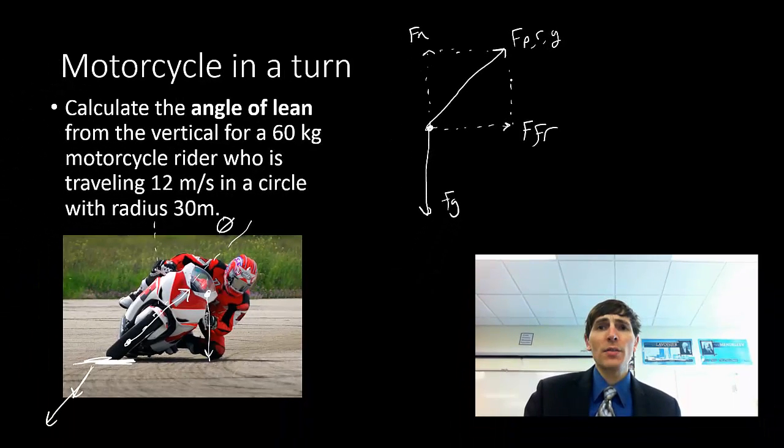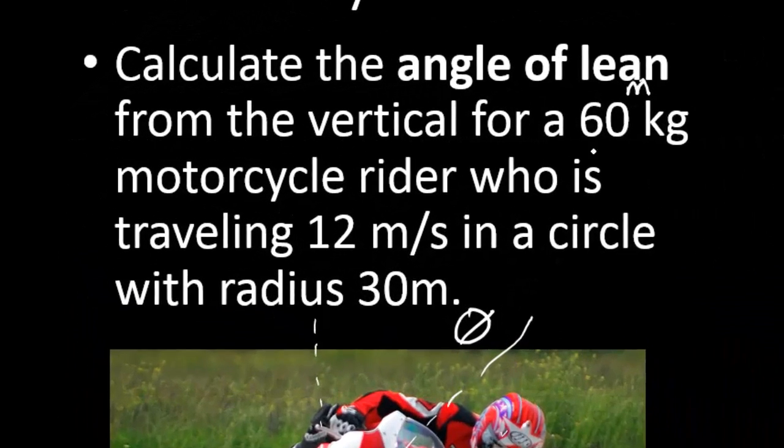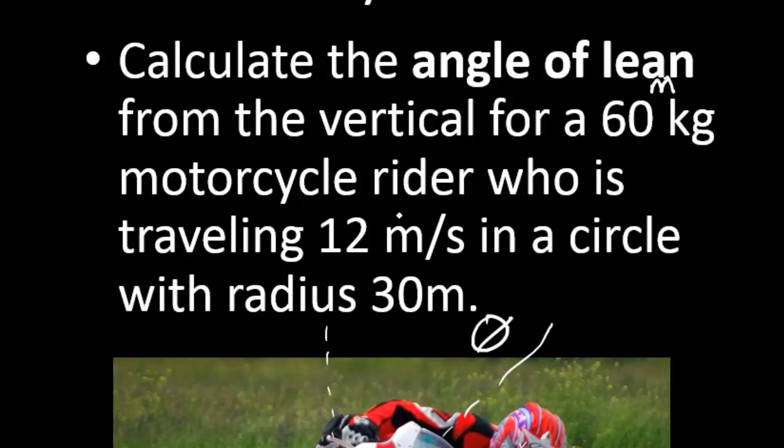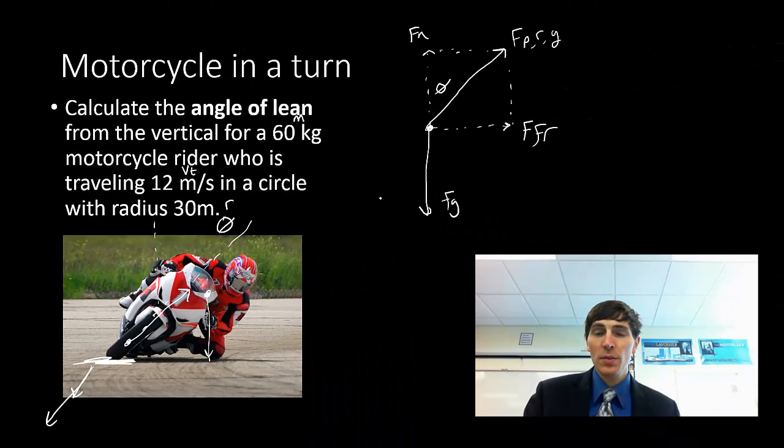So what we're doing is we're trying to figure out what is this angle of lean theta. The problem gives me a mass of my rider, 60 kilograms, moving at a velocity of 12 meters per second, and the radius is going to be 30 meters.